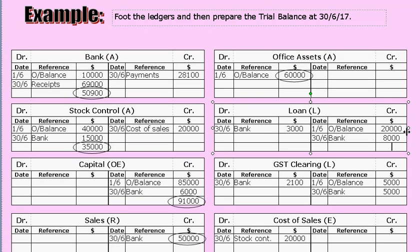The loan account has values on both sides. You add up the big side — $28,000 — and take away the little side — $3,000. Put the balance back on the big side: $25,000. That is the footed balance for the loan account.